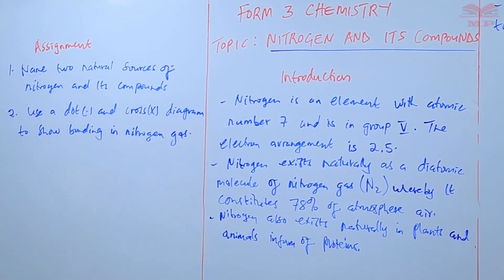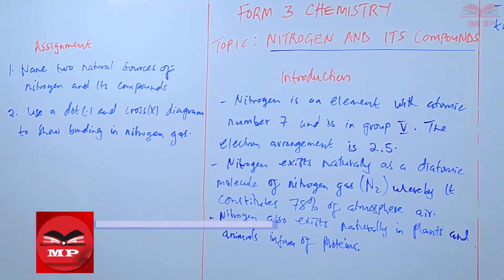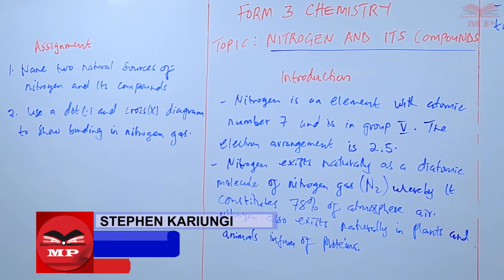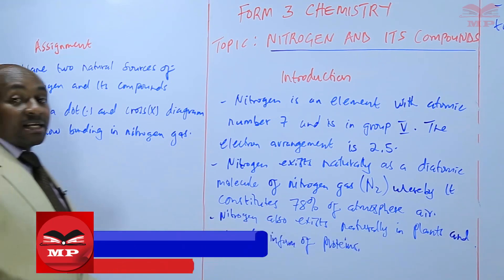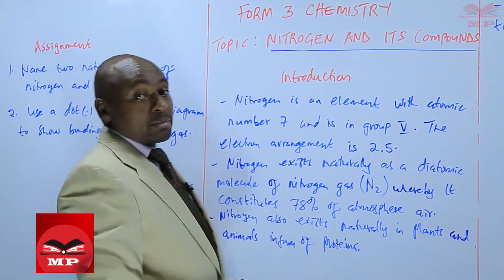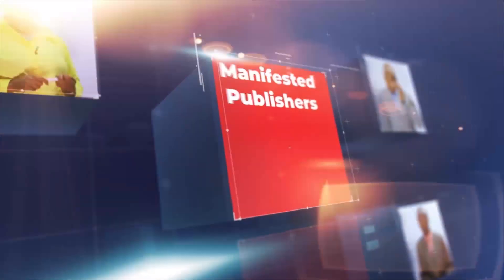The assignment: number one, name two natural sources of nitrogen and its compounds. Number two, use a dot-and-cross diagram to show bonding in nitrogen gas. We'll stop there until next time. Goodbye.